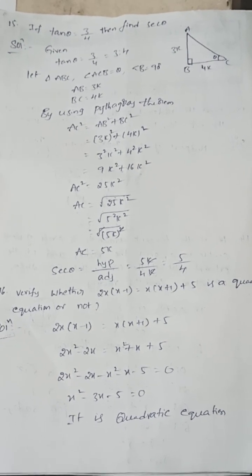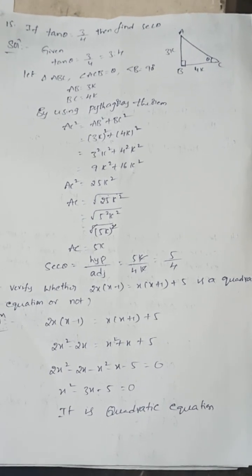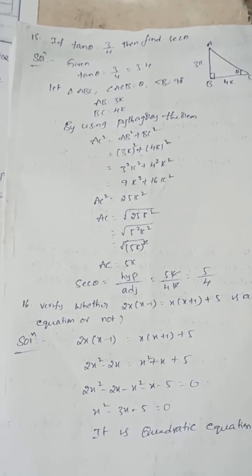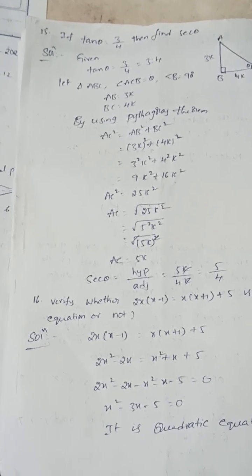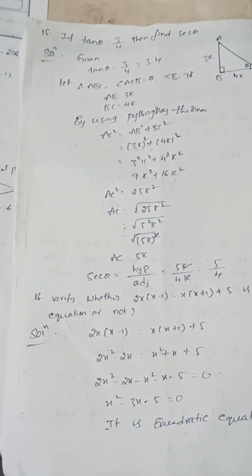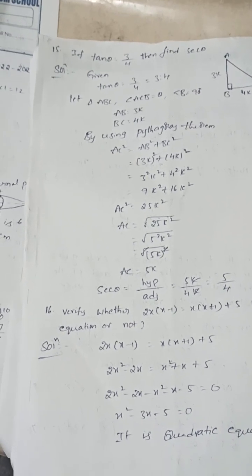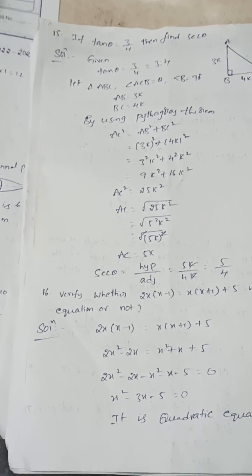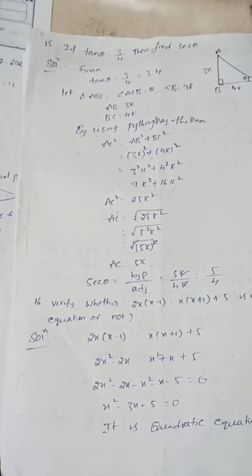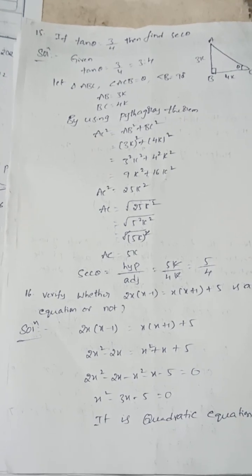Verify whether 2x(x−1) = x(x+1) + 5 is a quadratic equation or not. Expanding: 2x² − 2x = x² + x + 5. Taking all terms to the left: 2x² − x² − 2x − x − 5 = x² − 3x − 5. The degree is 2, so it is a quadratic equation.